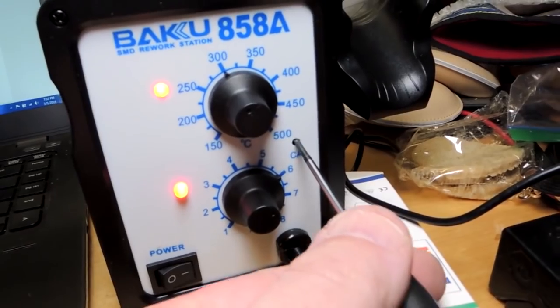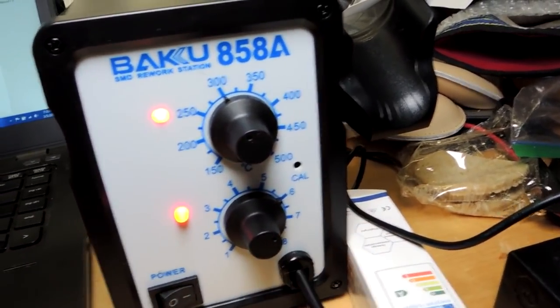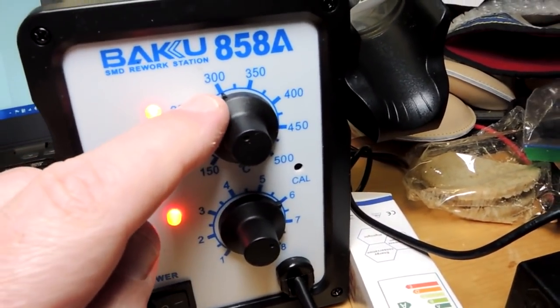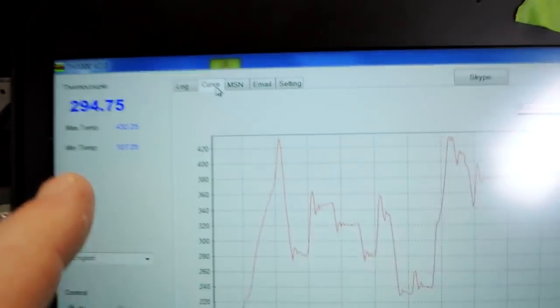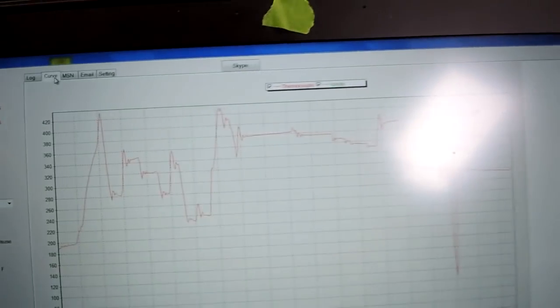So although the set point wasn't that accurate out of the box, there's a potentiometer on the front panel of this unit and it can be easily adjusted. I set it to 300 here for example and of course now have it reading just around 300 which is perfect.